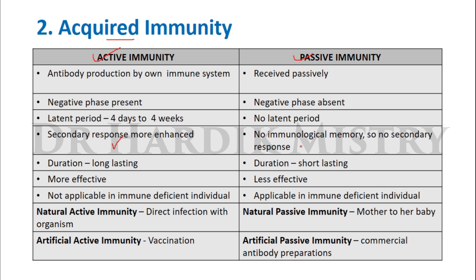In passive immunity, there is no immunological memory, so there is no secondary response. Duration is long-lasting in active immunity, but short-lasting in passive immunity. Active immunity is more effective, while passive immunity is less effective. Active immunity is not applicable in immune-deficient individuals, whereas passive immunity is applicable in immune-deficient individuals.